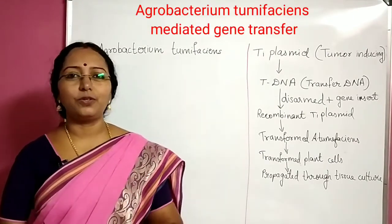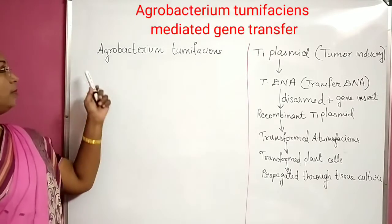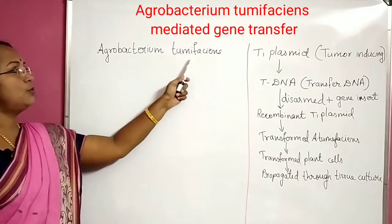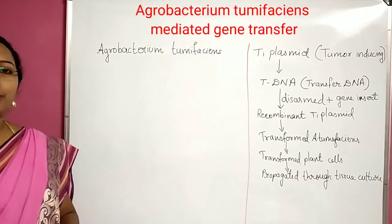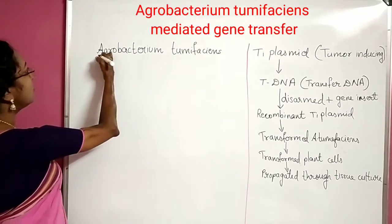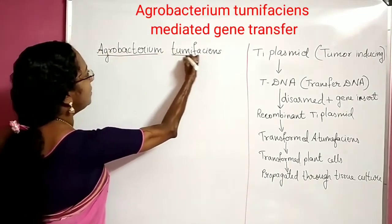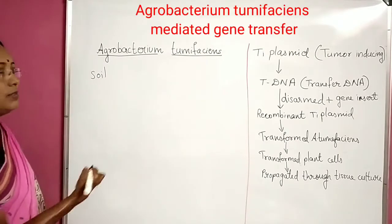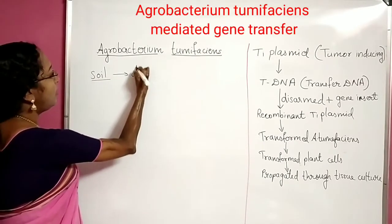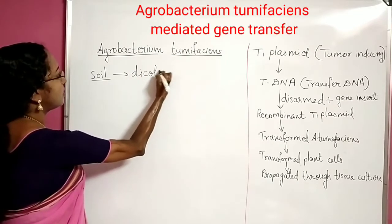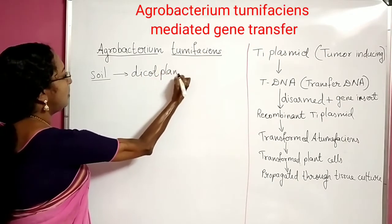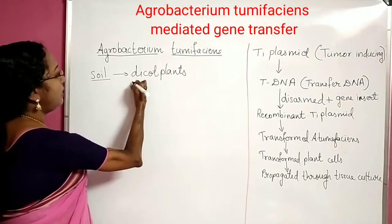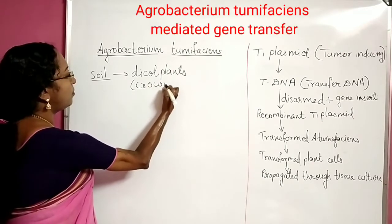I think it is very interesting for all of you. We'll learn about this particular bacterium first — Agrobacterium tumefaciens. This is a soil bacterium found in soil, and it generally infects dicot plants. It affects the crown region of dicot plants.